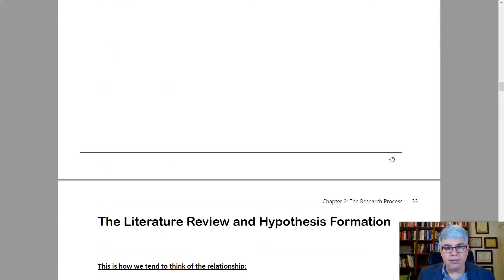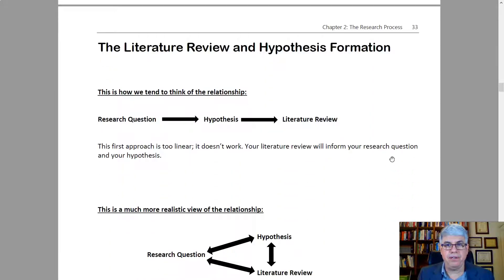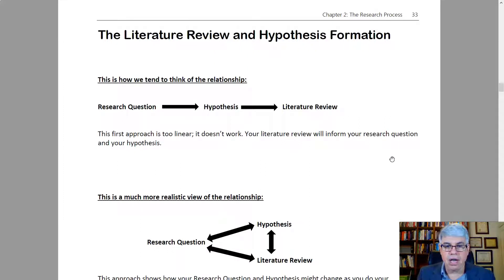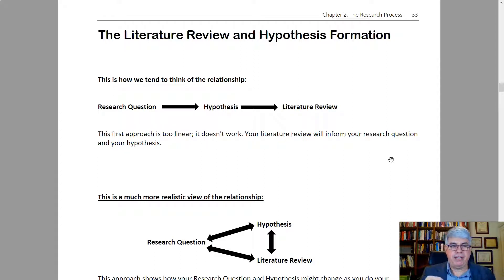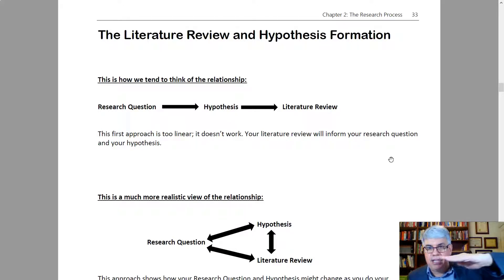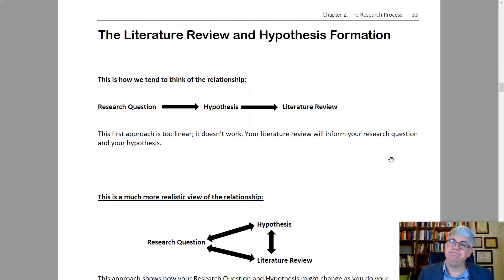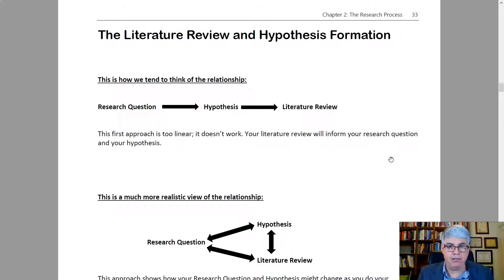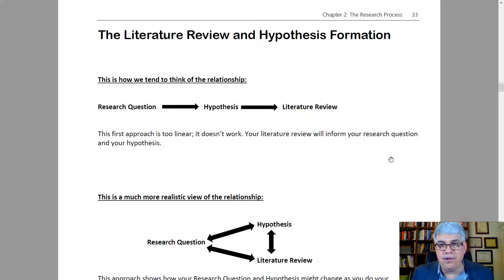Now let's look at how the literature review relates to hypothesis formation. We tend to think of the relationship between the research question, the hypothesis, and the literature review as going in a linear way — starting with a research question, forming a hypothesis, then doing a literature review. But that's too linear; it doesn't work that way. Your literature review will inform your research question and your hypothesis.